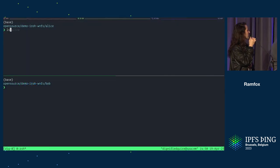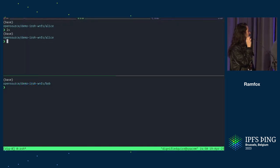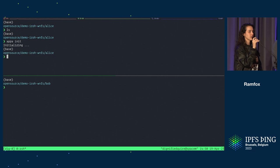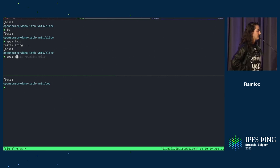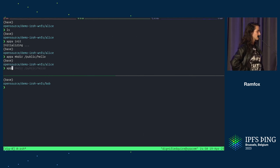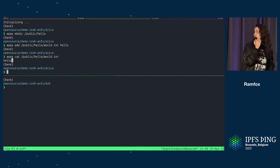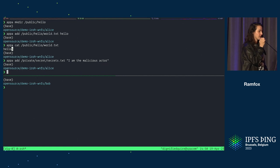So let's initialize APA on Alice. And now let's do some file systemy things. We can create a file and maybe create a directory in the public folder and have some file that Alice is cool with sharing to the world. Let's check that that file exists. So let's get a little more interesting and maybe add a file to the private folder. Alice has a secret that she doesn't want anyone to know.